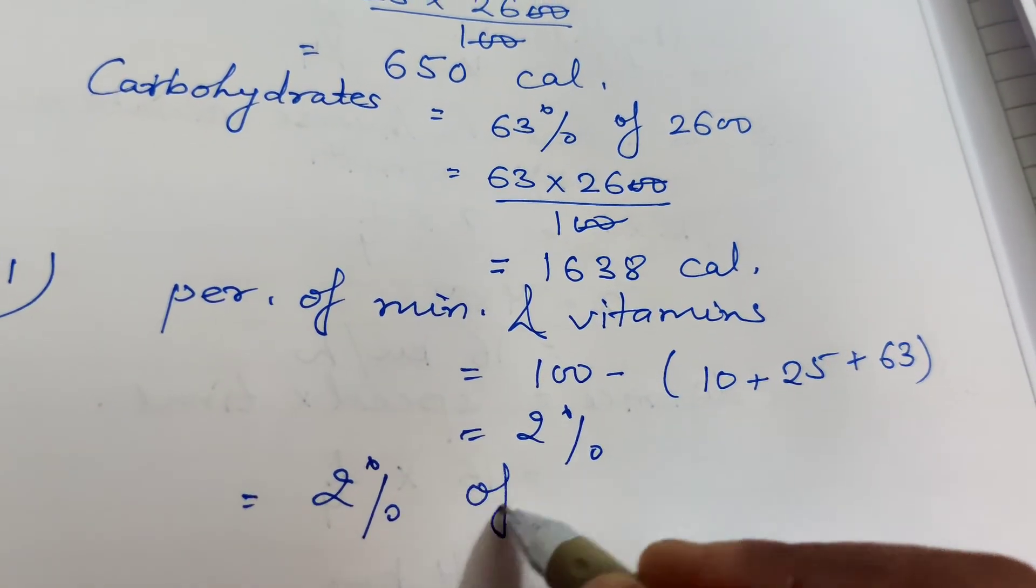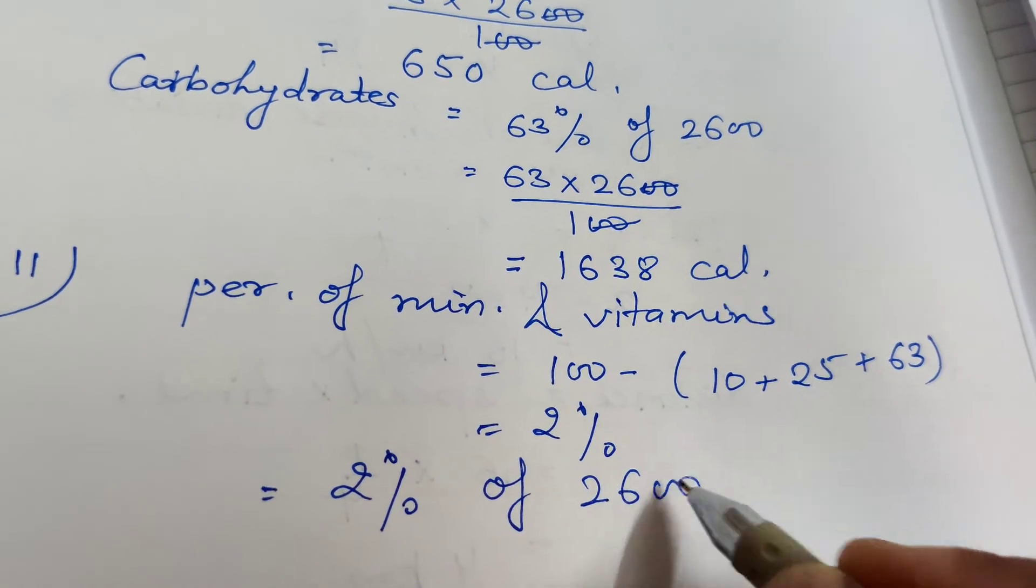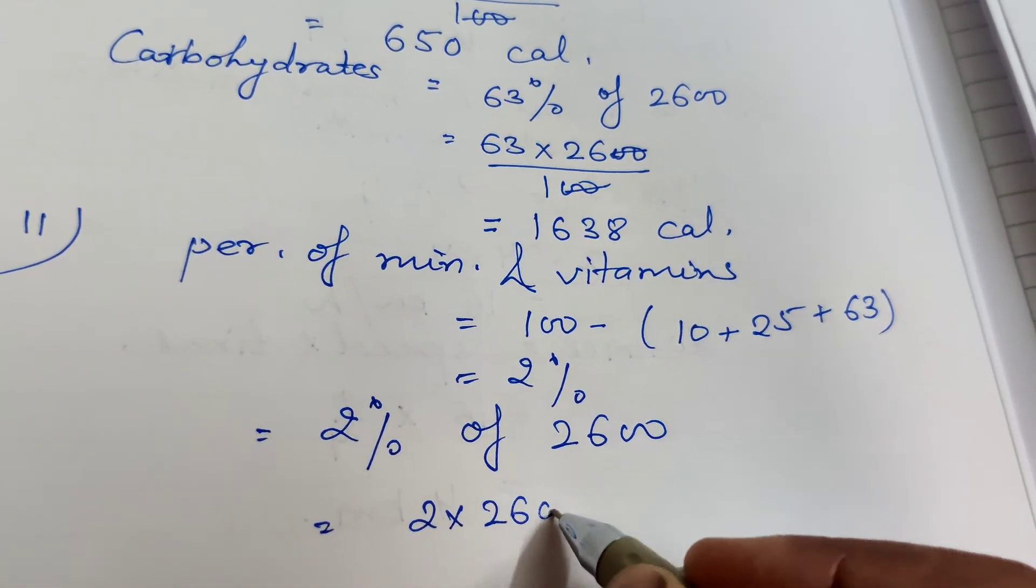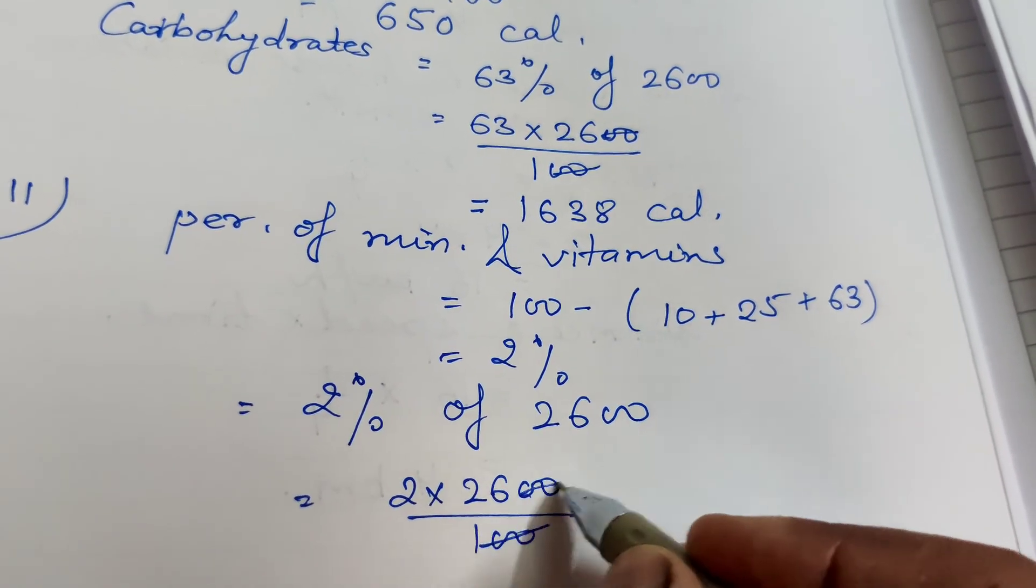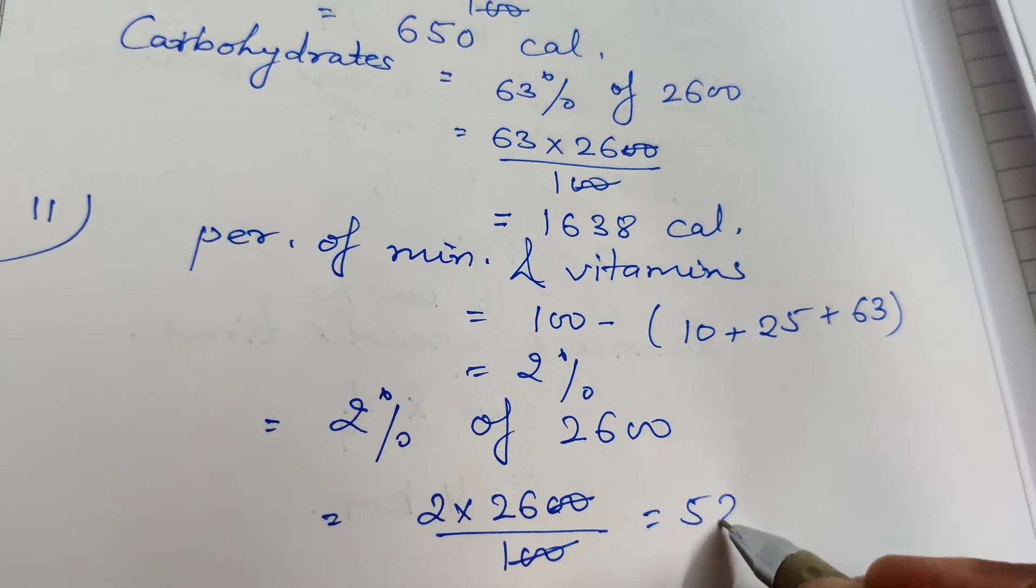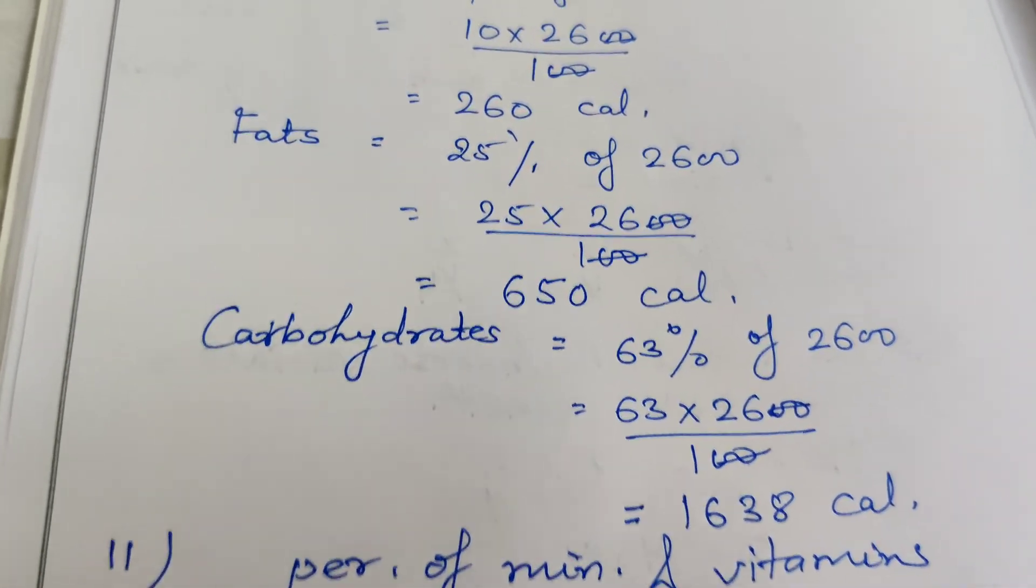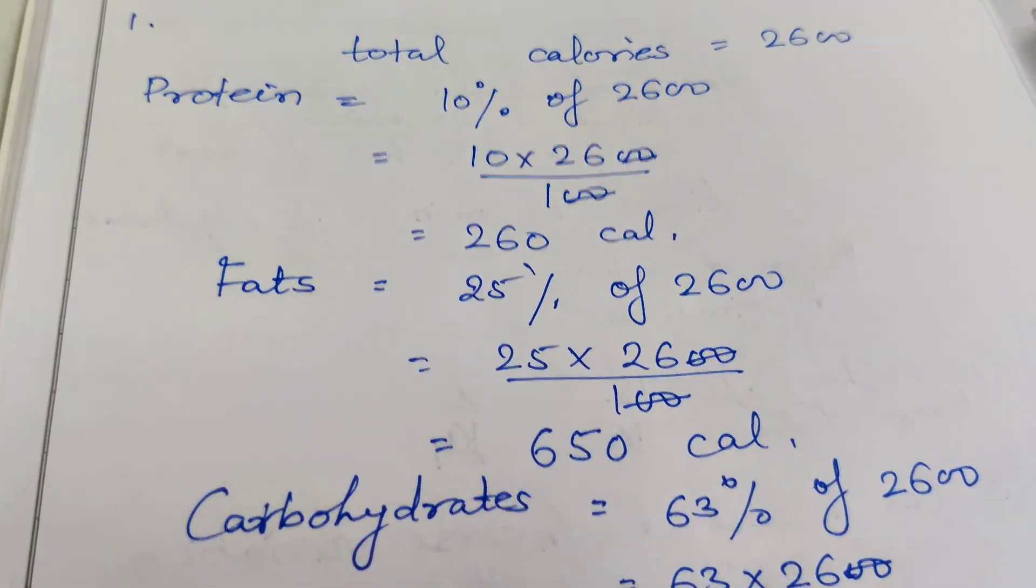2 into 2600 by 100 equals 52 calories. This is the solution of the given case study. Thank you.